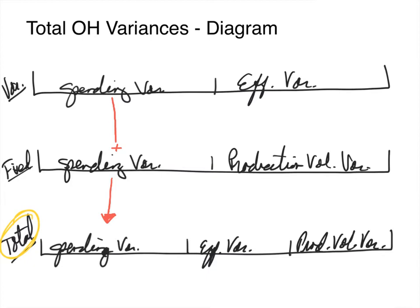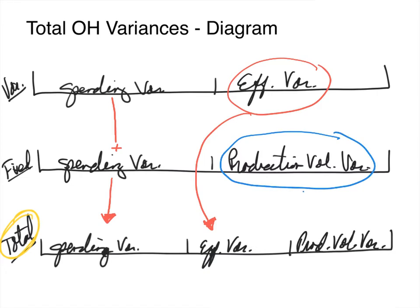When I have a plus sign there, keep in mind these spending variances could be different signs — one could be favorable, one could be unfavorable. If they are different signs, you would subtract them to get the overall spending variance. The overall efficiency variance — well, looking at the top two charts, we only have one efficiency variance, so that will be the total efficiency variance. And since there is only one production volume variance in the top two charts, that will also be the total production volume variance.